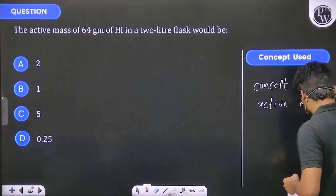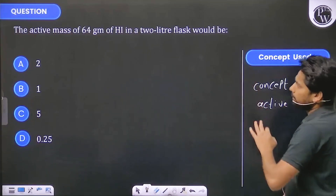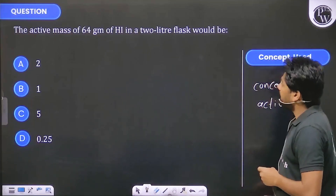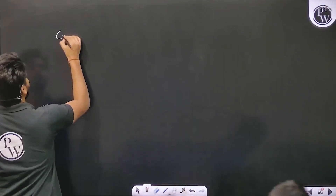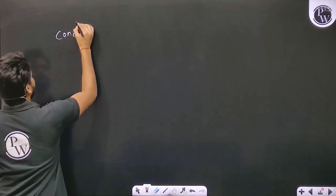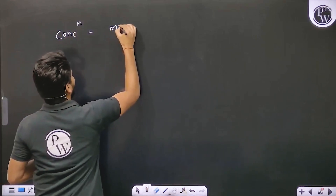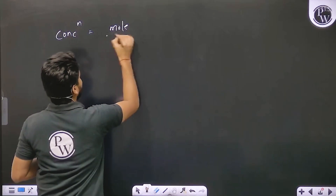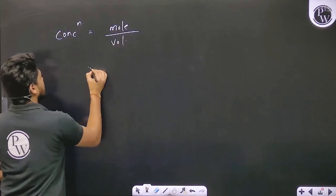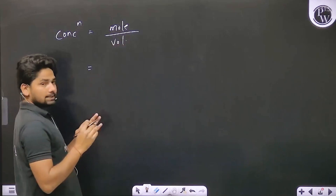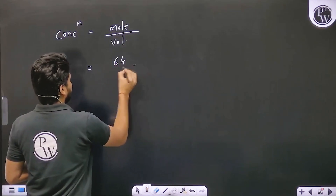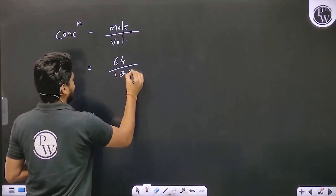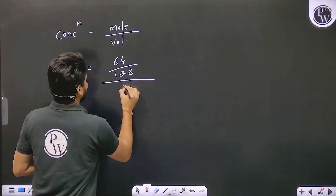64 grams of HI is given and the flask is 2 liters, so we need to find the concentration. Concentration is moles divided by volume. Moles = 64 divided by the molecular mass of HI, which is 128, giving 0.5 moles.